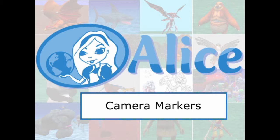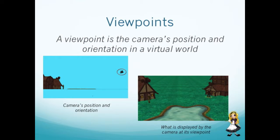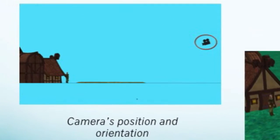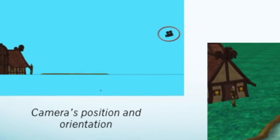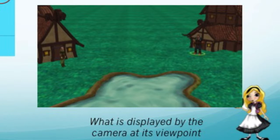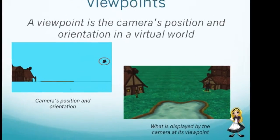The purpose of this section is to illustrate how to change the camera's position in a scene using marked viewpoints. A viewpoint is the camera's position and orientation in a virtual world. Alice also allows you to create your own viewpoints with the use of markers.